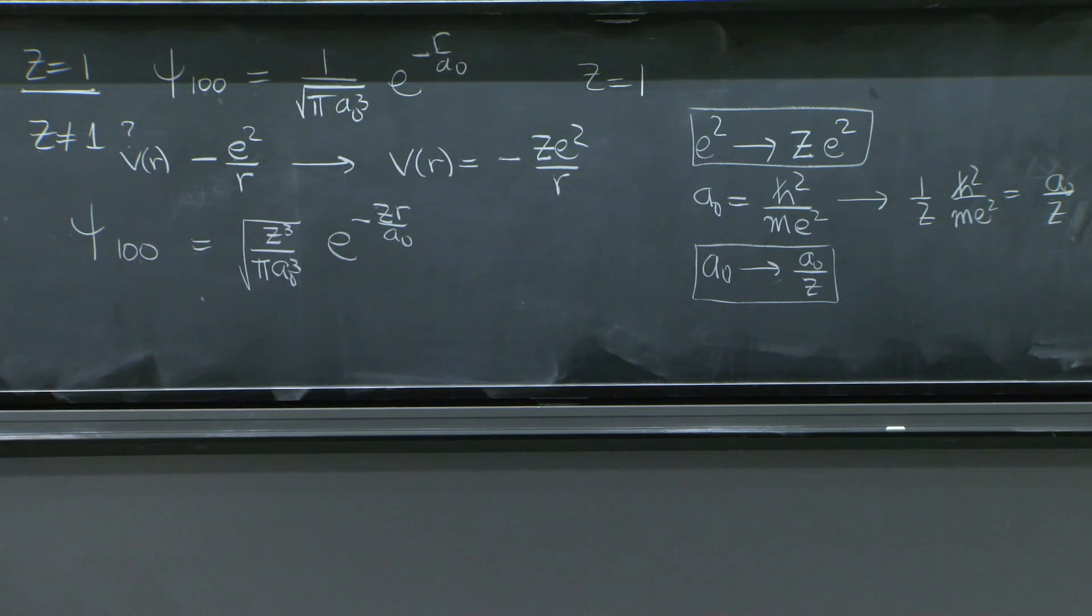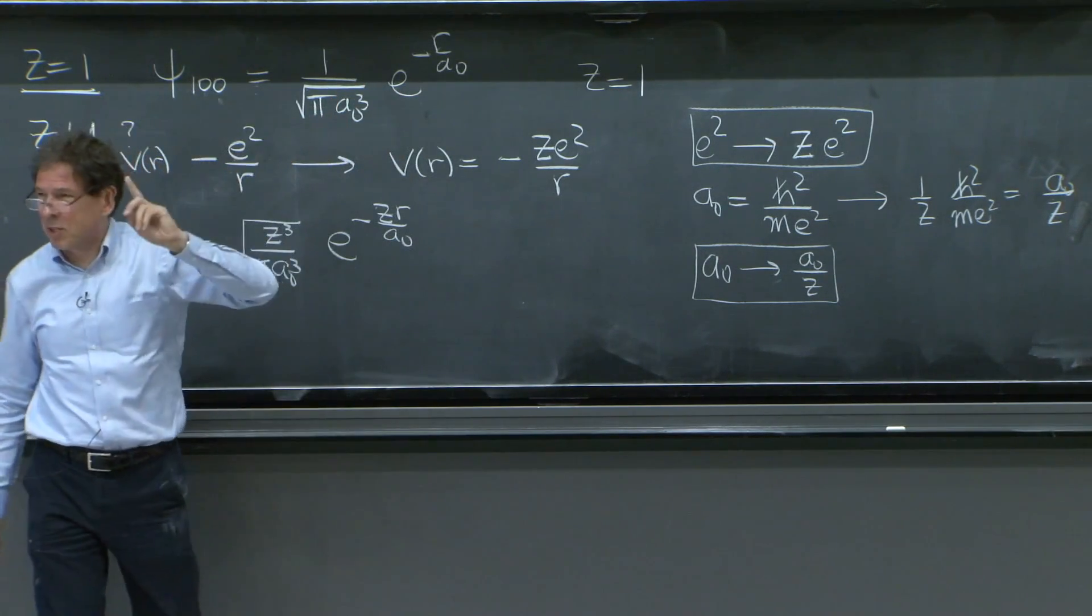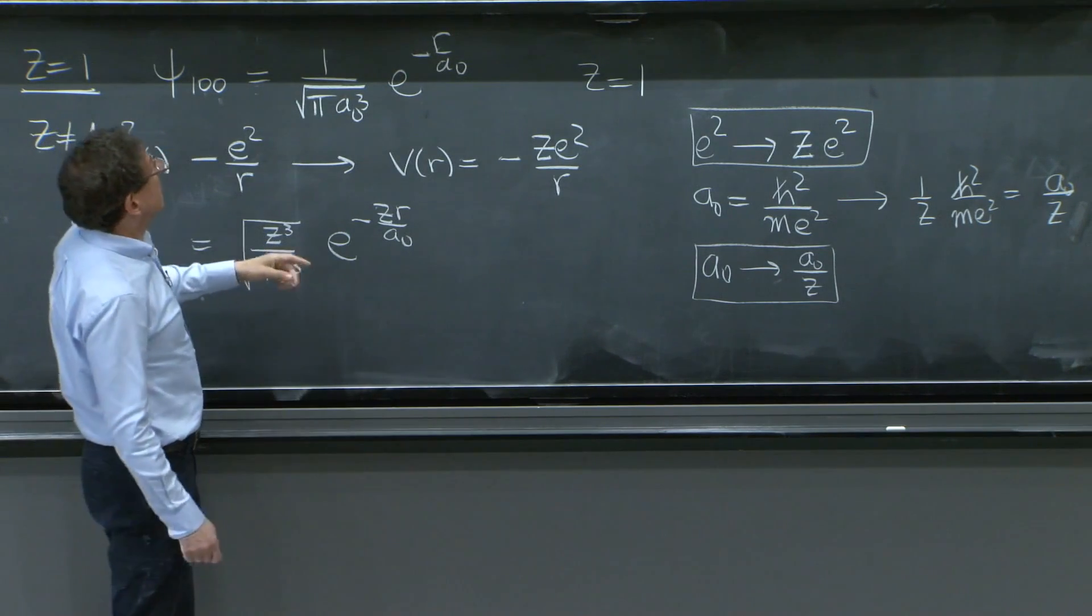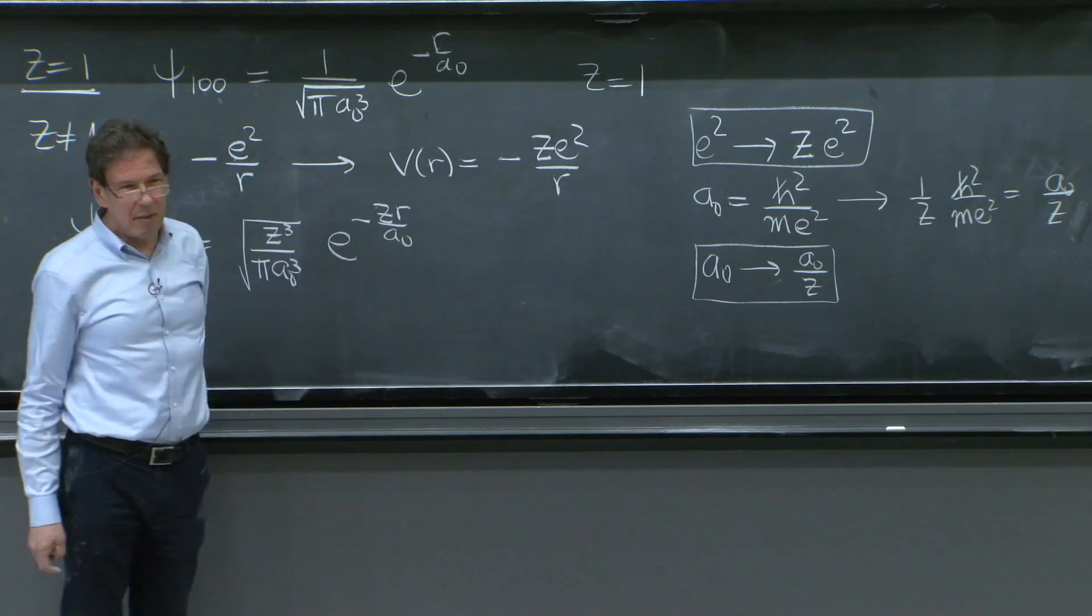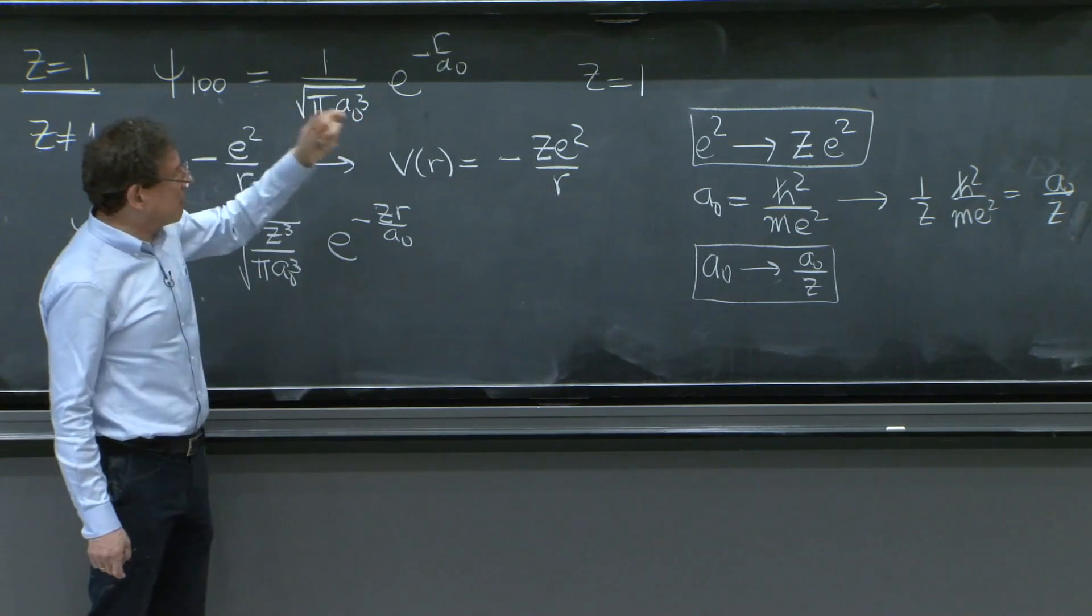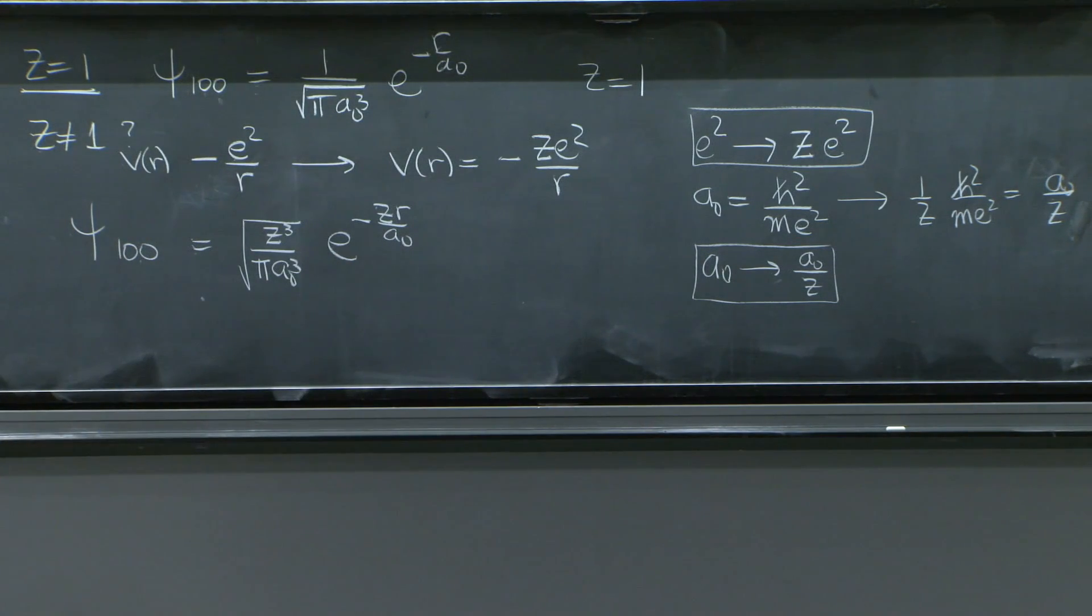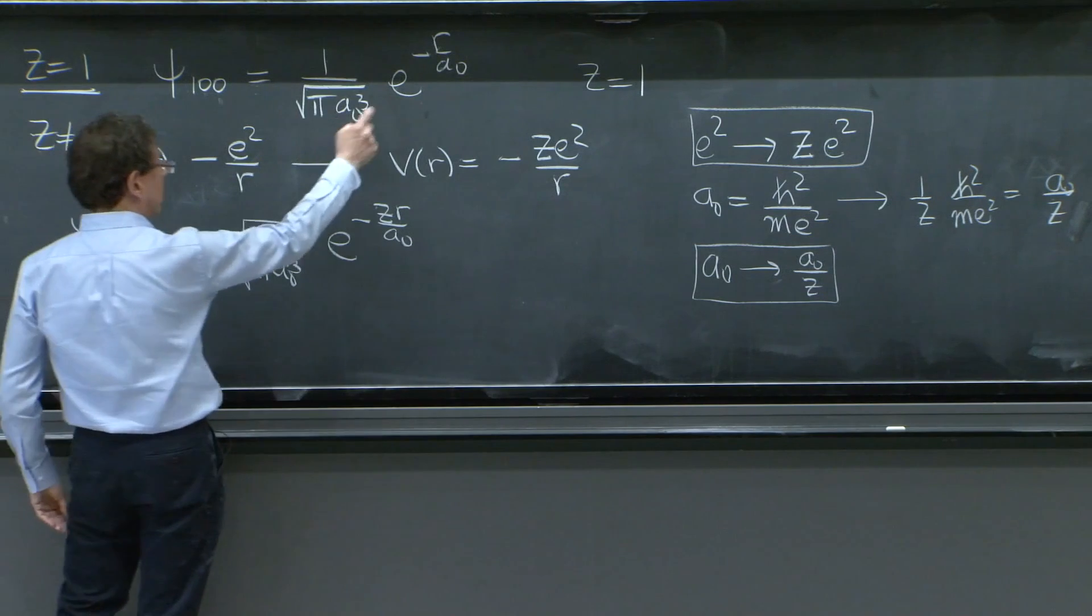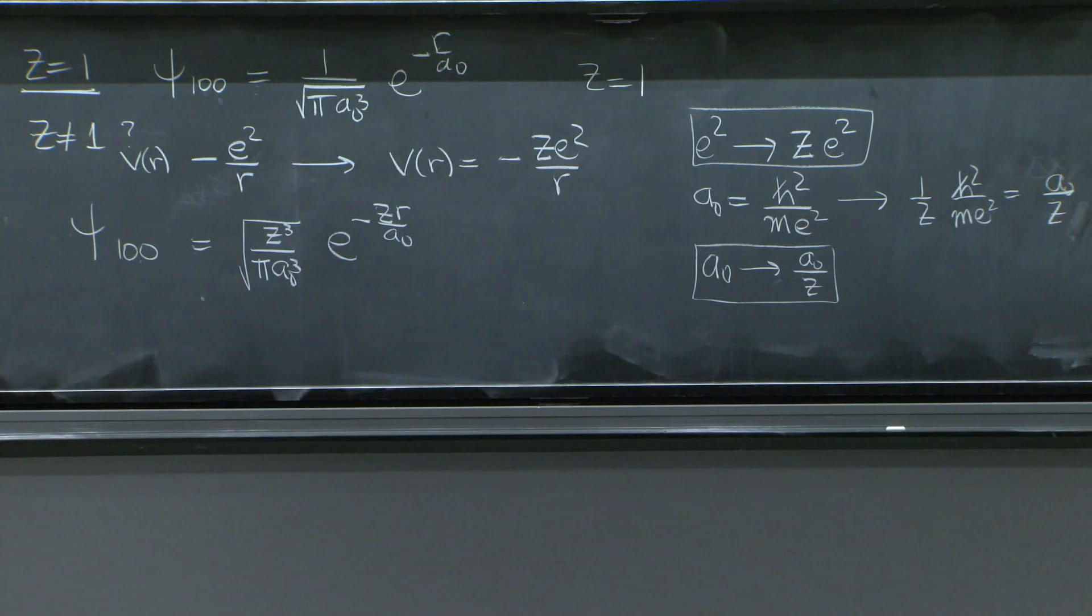And this must be right because, in fact, if this wave function was normalized, when you do the integral, somehow the a0 did not matter, must not matter. You check psi squared integrated over volume is equal to 1. The a0 must be canceling here. And therefore, if it works for a0, it must work for a0 over z. And that must be the wave function. So that's fine.